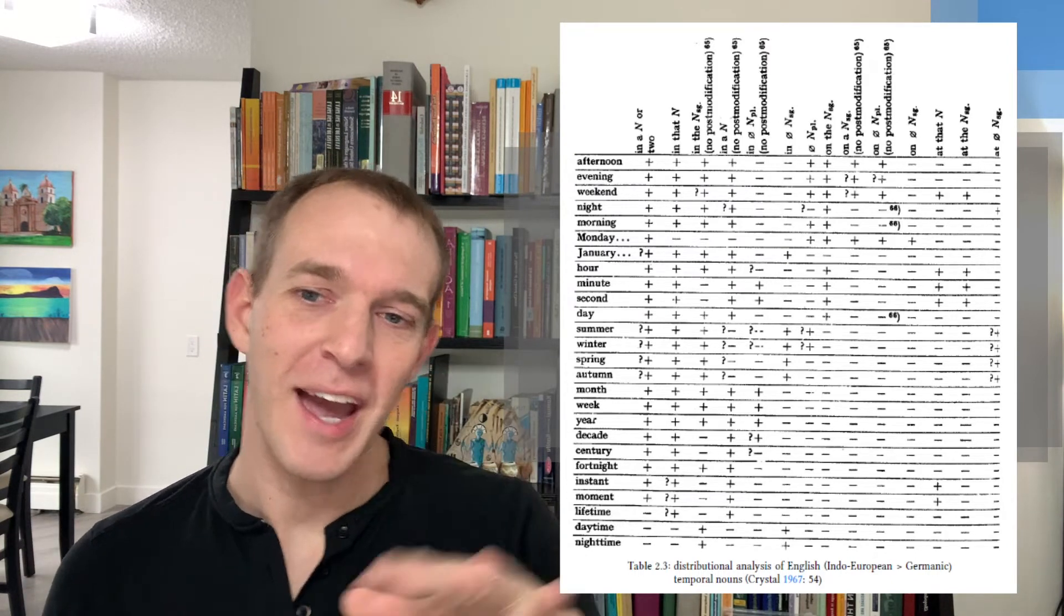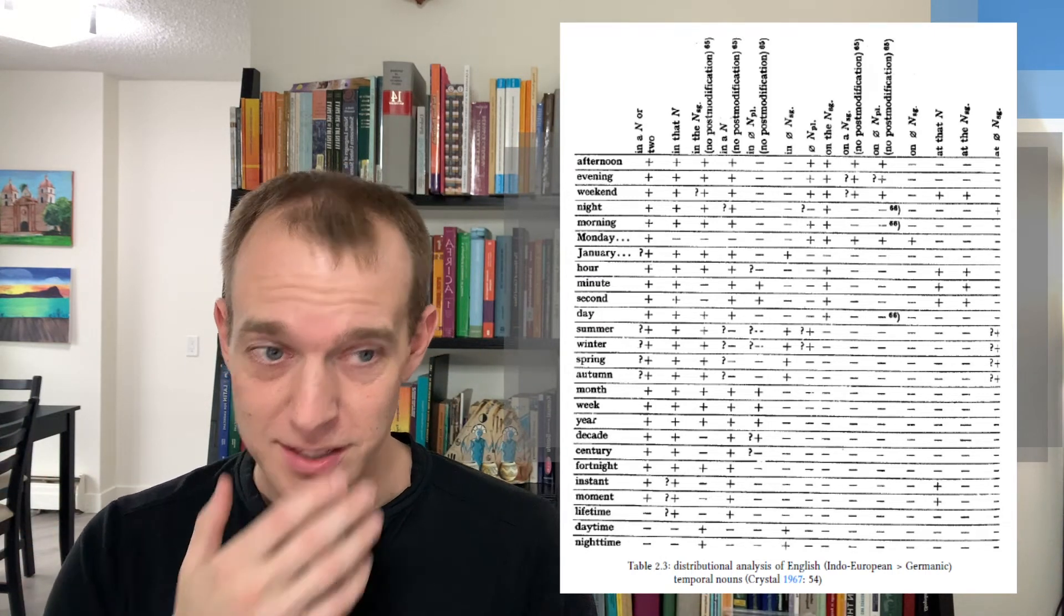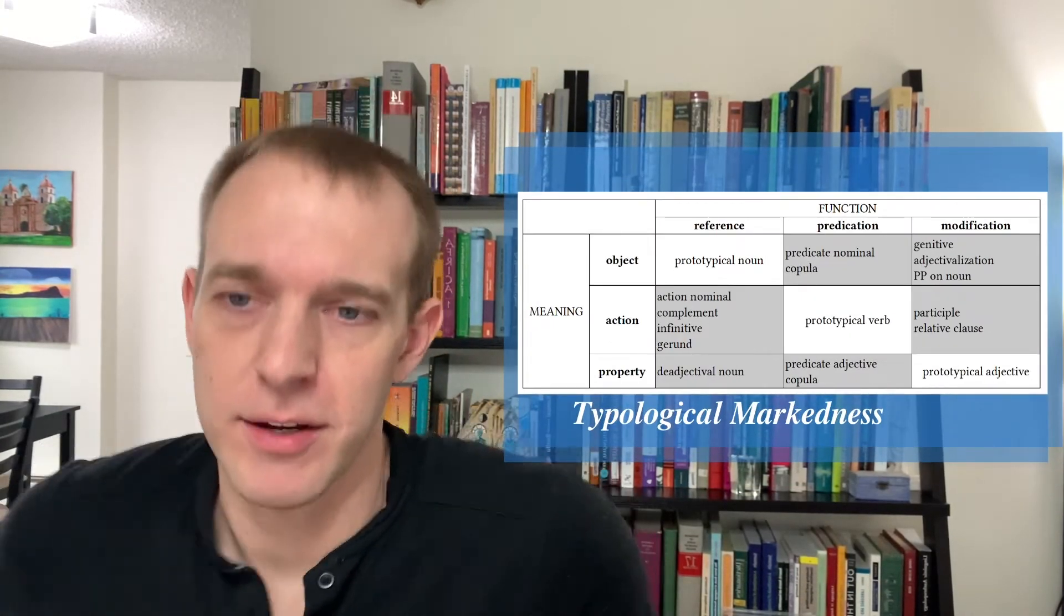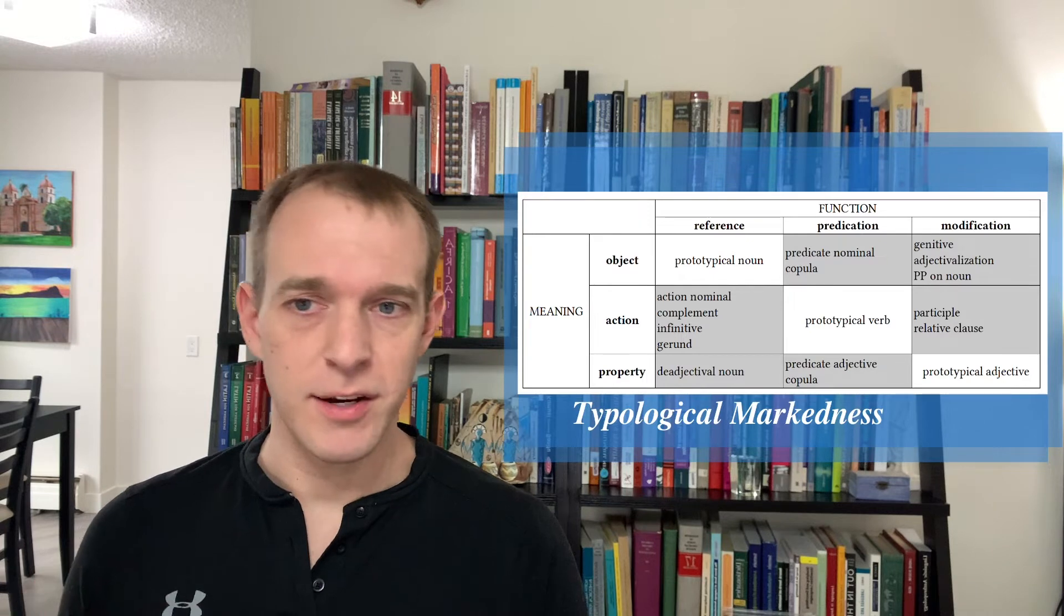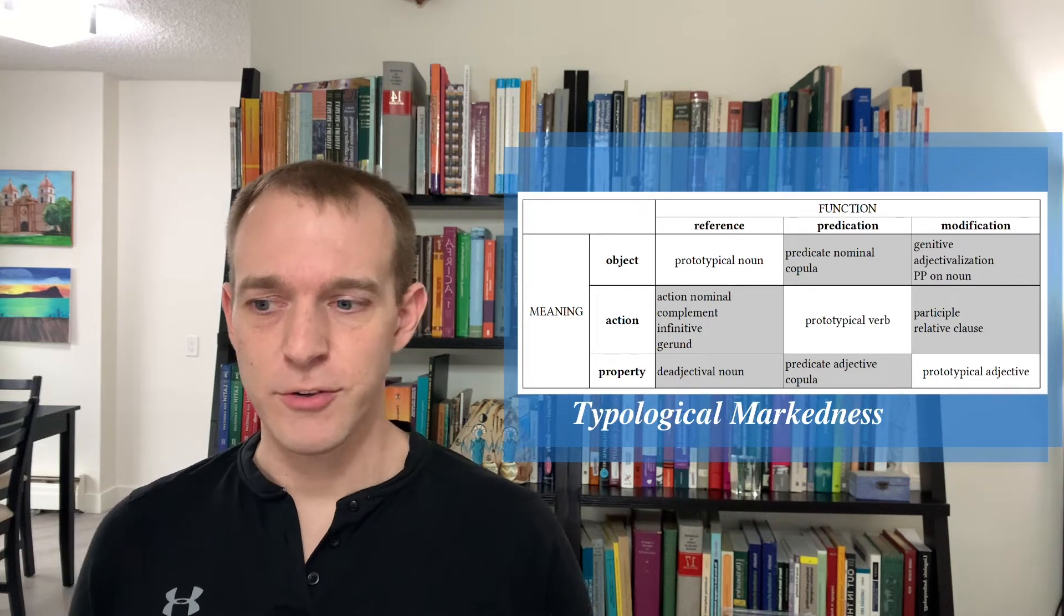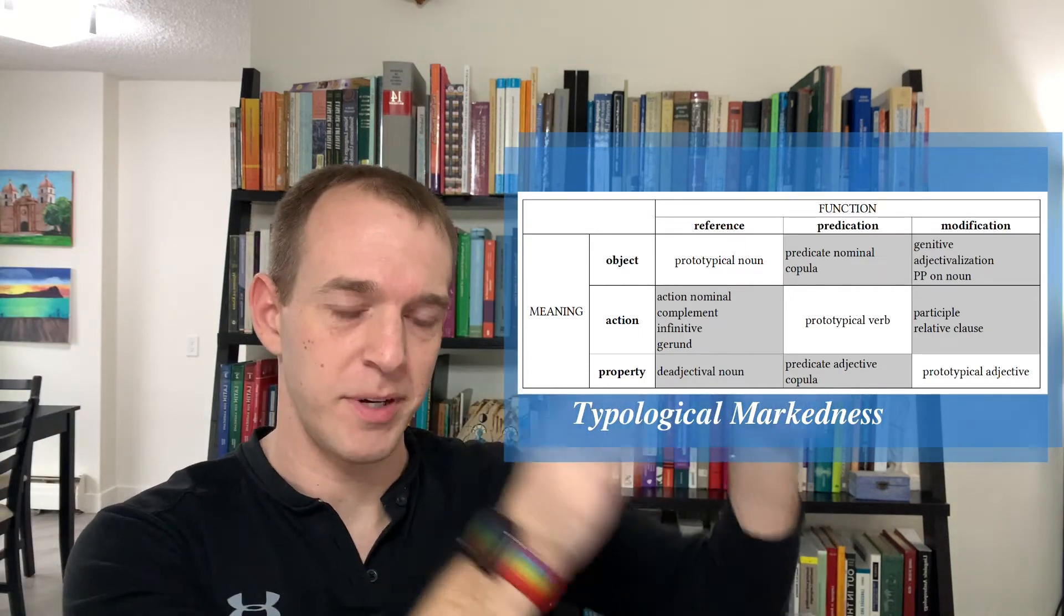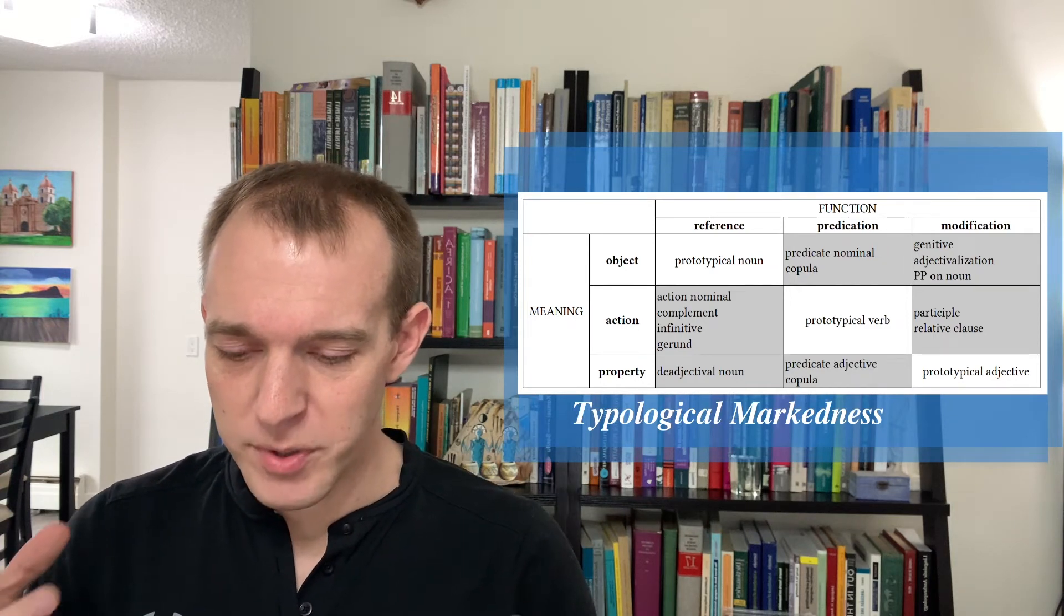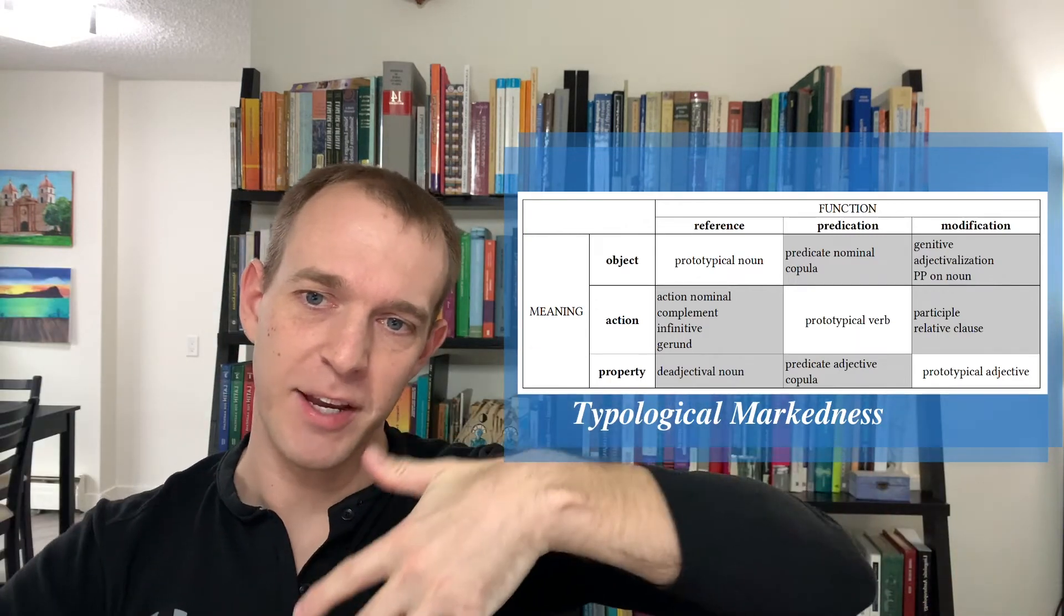And so there have been all sorts of tedious debates in the literature about, well, maybe we should make a subcategory for these ones or lump these together into a supercategory or how do we deal with this? So one of the prominent responses to this problem that's been given comes from William Croft, who does a lot of great work in language typology and what's called construction grammar. And the construction grammar approach in general doesn't take languages to have these big monolithic categories like noun, verb,